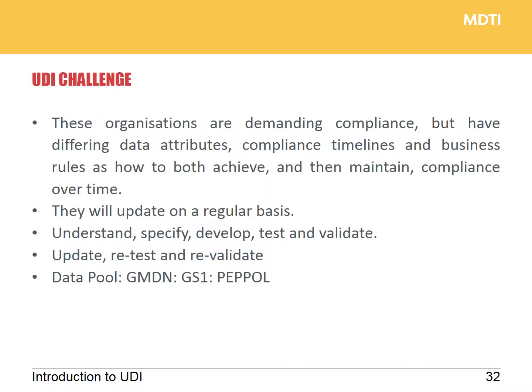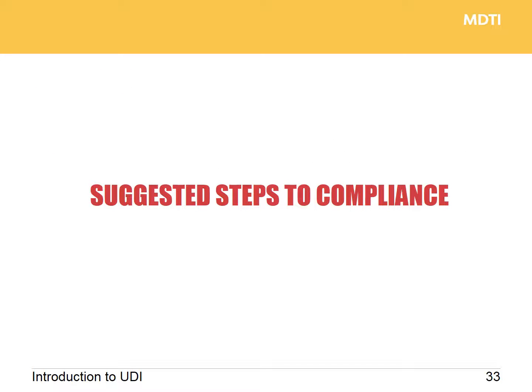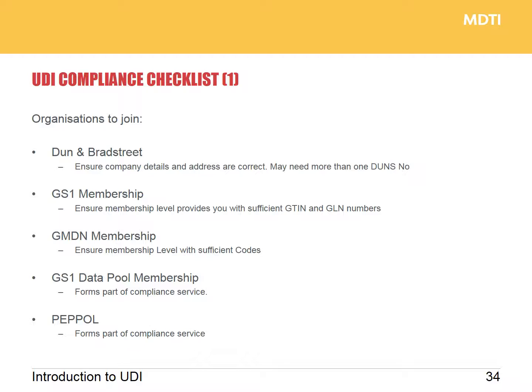It is a huge challenge. Having helped many companies go through UDI compliance, I'd like to cover some suggested brief steps you should be looking at as you start your UDI compliance projects over the coming weeks and months. The first things to do for compliance is to join the relevant organizations: Dun & Bradstreet for DUNS numbers, GS1 for your codes, GMDN for product codes, datapool membership, and also PEPOL — we're a PEPOL access point. You won't actually have to do anything with PEPOL for the next two to three months, but join the organizations first and get that information into your systems.